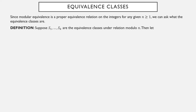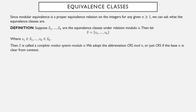Suppose S1 through Sk are the equivalence classes under the relation modulo n — they form a partition of the integers, and every integer belongs to one of them. Then suppose s is a collection s1 through sk, where each si is drawn from the corresponding equivalence class Si. That set s is called a complete residue system modulo n — it contains exactly one element from each equivalence class.